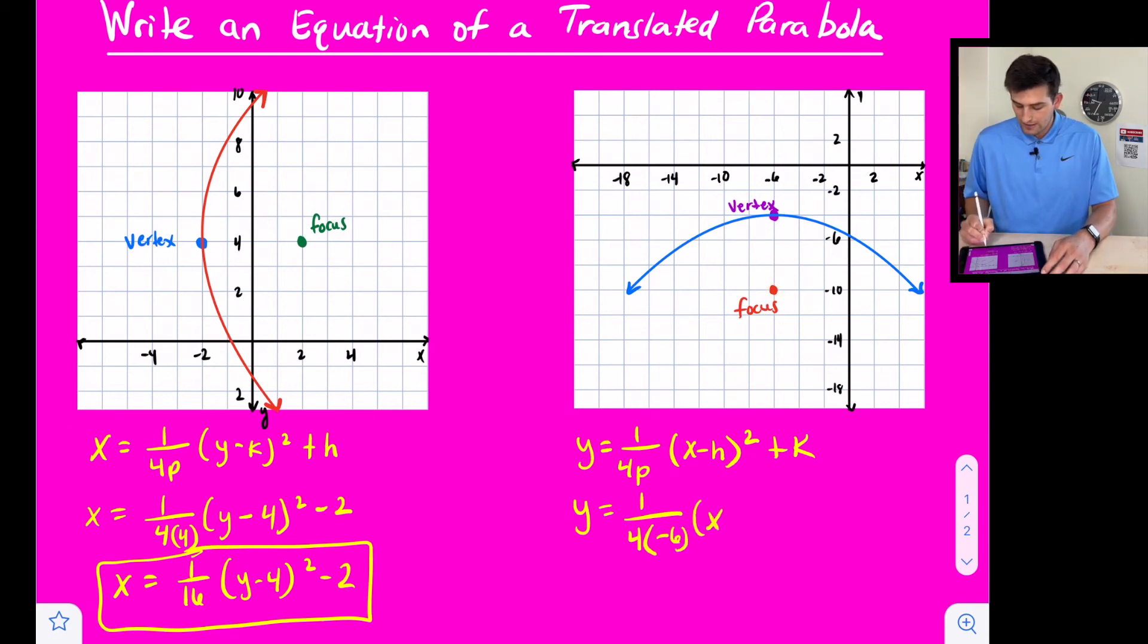Then we have X, and for H, this is left or right. Notice our vertex has an X value of negative 6. If we went left 6, that is a plus 6 for our equation. For K, our vertex is at negative 4, so we're going to write minus 4.